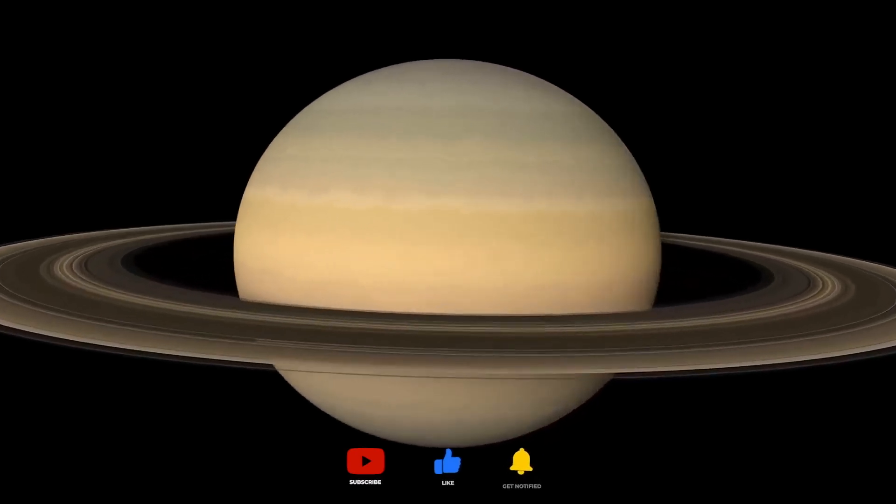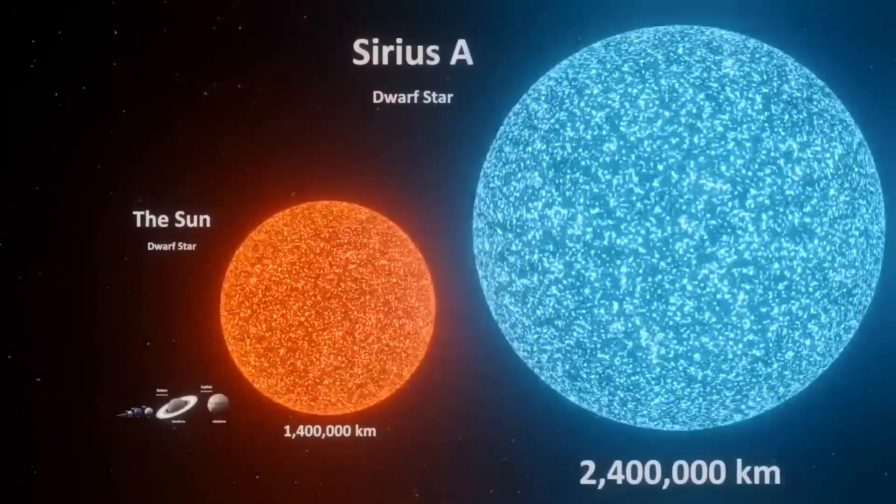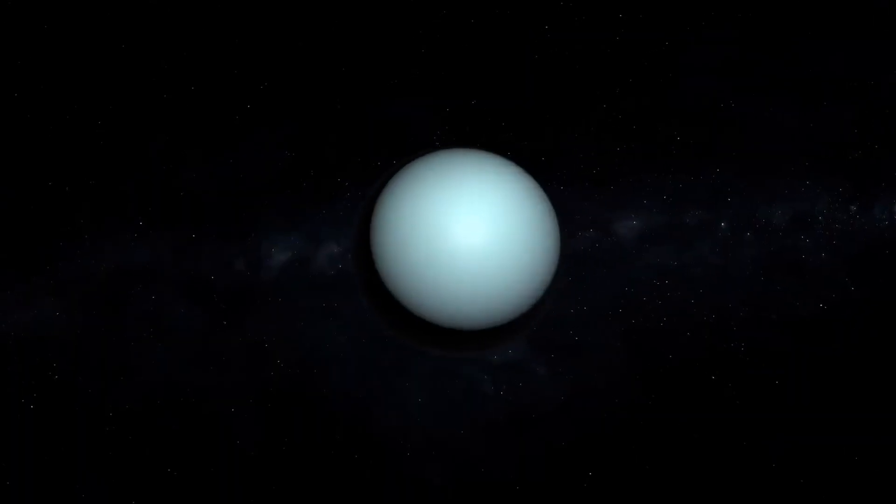Jupiter, the largest planet in our solar system, is located much farther, at an average distance of about 778 million kilometers.